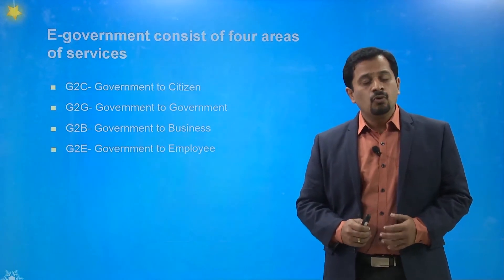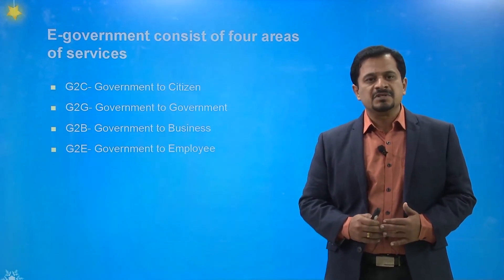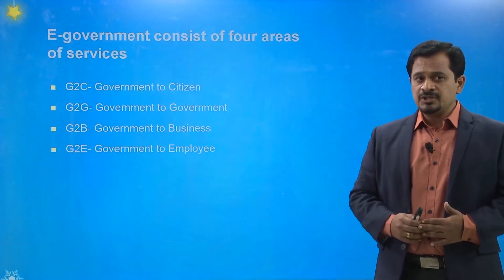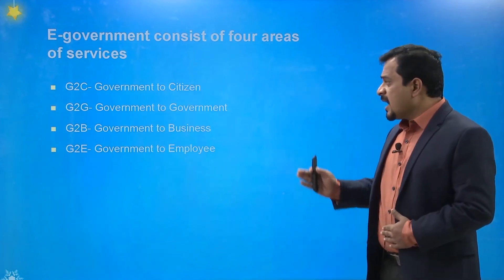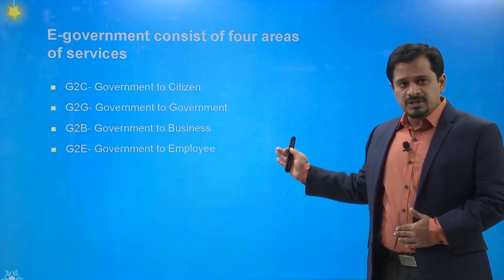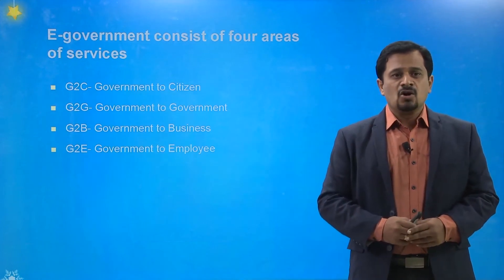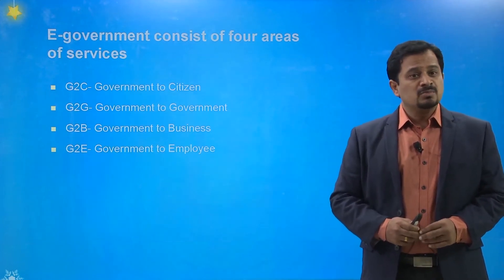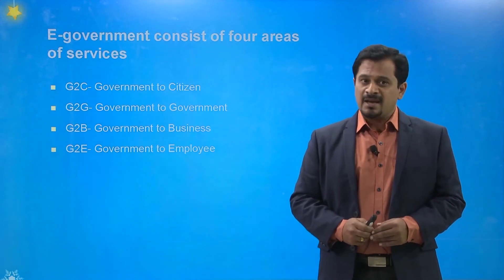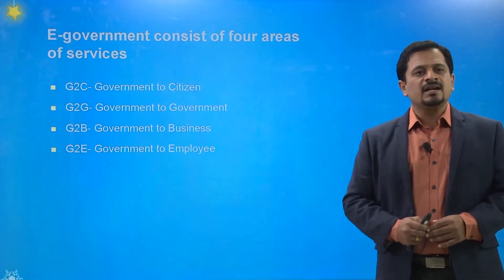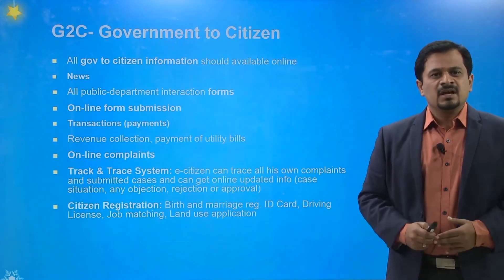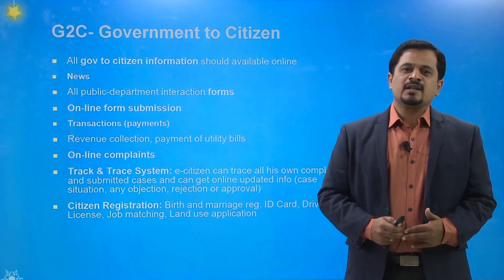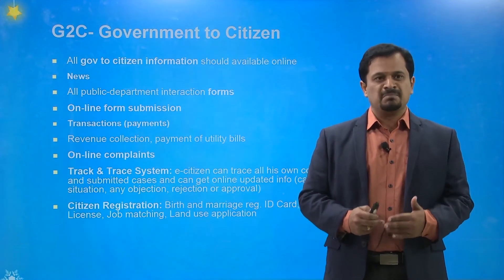E-government consists of four areas of services: G2C, G2G, G2B, and G2E — meaning government to citizen, government to government, government to business, and government to employees. Let us see how each of these works.